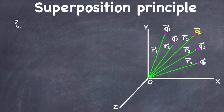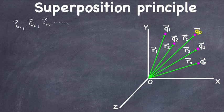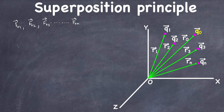F naught 1 is the force on charge Q naught due to charge Q1. Similarly, F naught 2 is the force on charge Q naught due to charge Q2. F naught 3 is the force on charge Q naught due to charge Q3, and F naught N is the force on charge Q naught due to charge QN. All these forces are acting on the given charge Q naught.